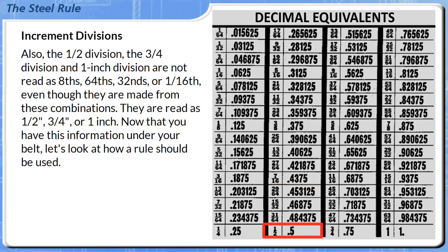Also, the half division, the 3/4 division, and 1 inch division are not read as 8ths, 64ths, 32nds, or 1/16th, even though they are made from these combinations. They are read as half inch, 3/4 inch, or 1 inch. Now that you have this information under your belt, let's look at how a rule should be used.